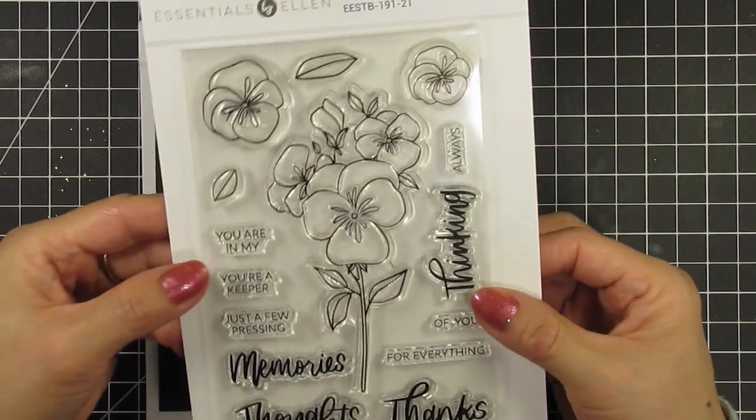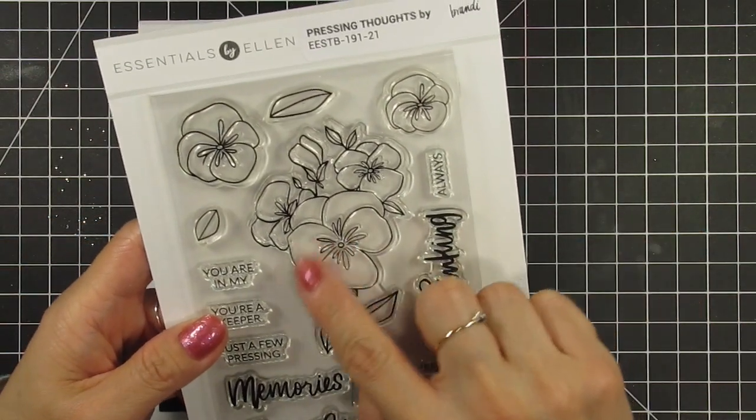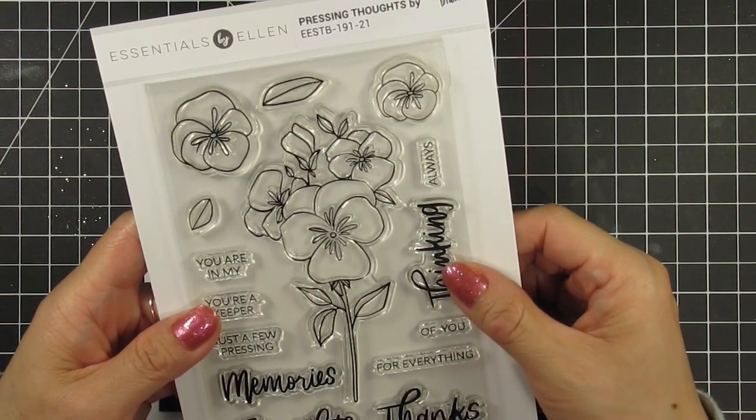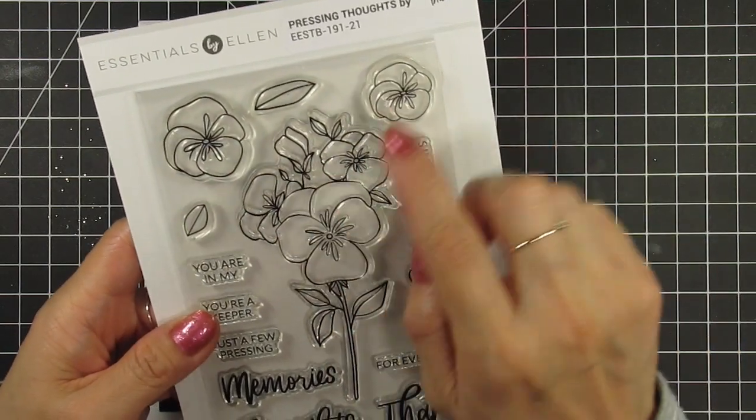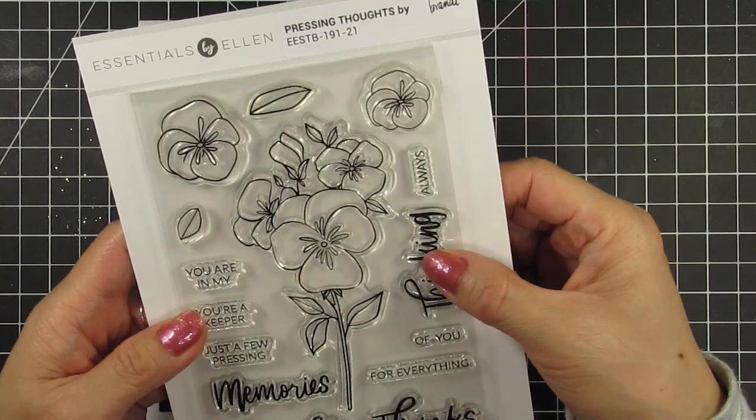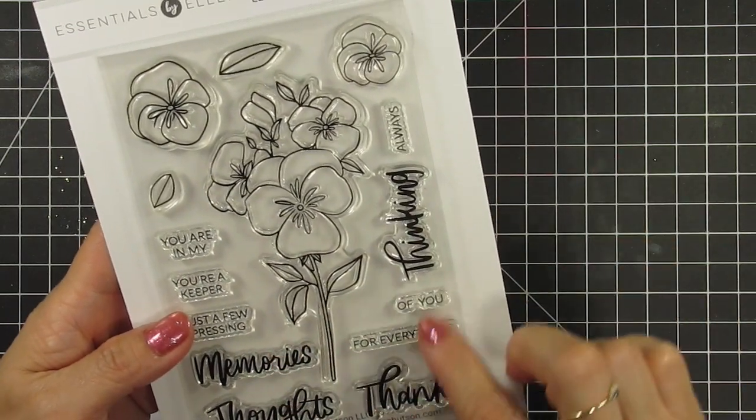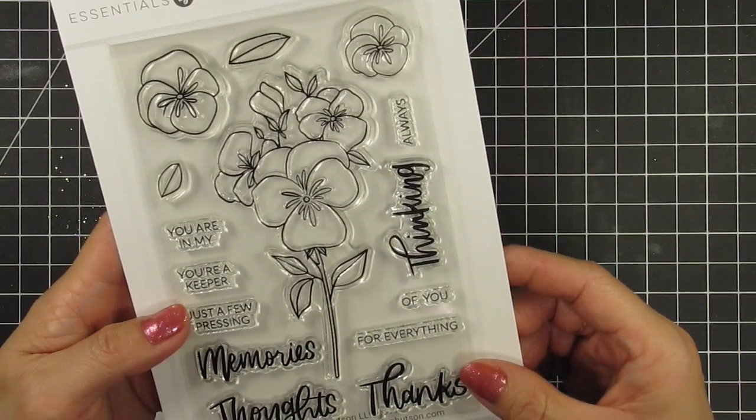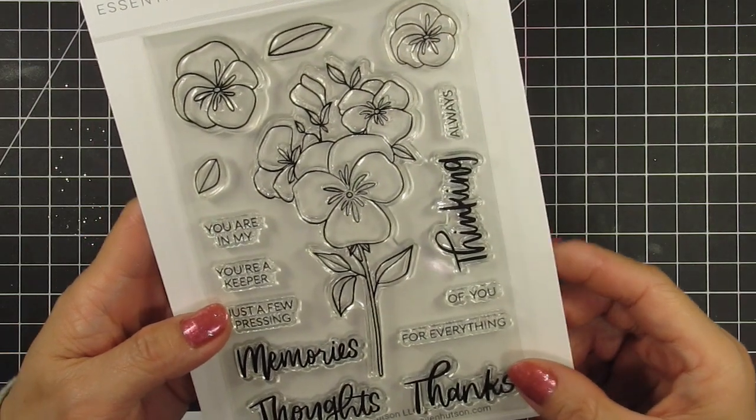If you love her floral stamps you'll want to add this one to your collection. It includes one big image of pansies plus four individual images for adding movement or layers. These flowers are perfect for coloring with your favorite medium or even stamping as is on colored cardstock like my project.